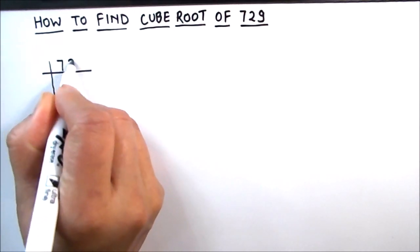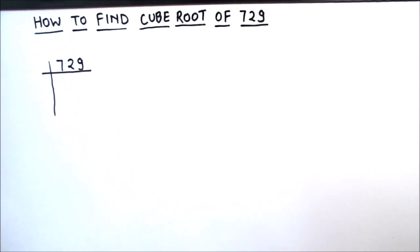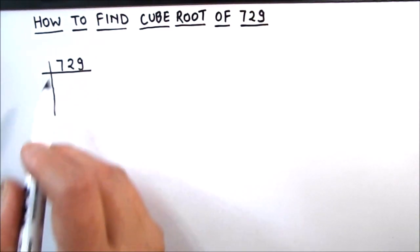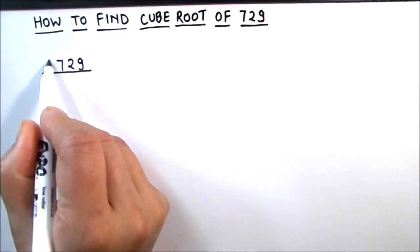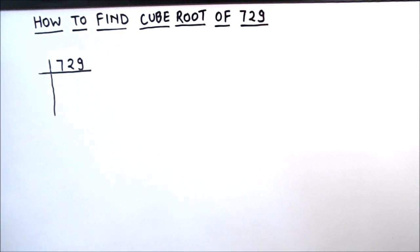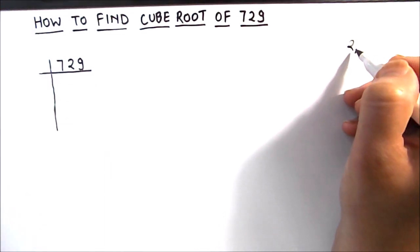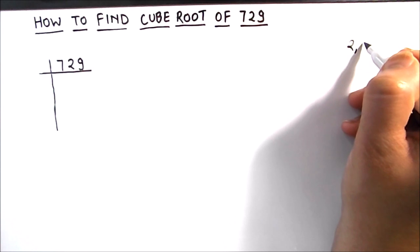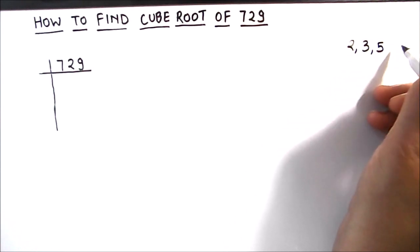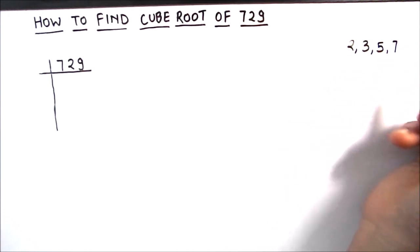We will write 729 in the ladder form. This is also called the ladder method, as we are making a ladder and finding the factors. I am going to write the first four prime numbers here on the right hand side so that it is easy for us in our prime factorization method.